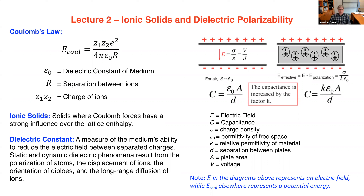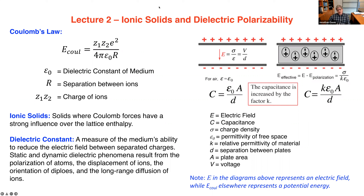The dielectric constant is the measure of a medium's ability to reduce the potential energy to separate charges, or to reduce the electric field between charges. It's not actually a constant — it's approximated as one. There are motions in crystals, glasses, and gases that influence charge or react in response to charge separation. That motion — such as the polarizability of electron clouds, the diffusion of atoms or ions, or the orientation of a molecule's dipole — all change the energy for separating charge in that medium.